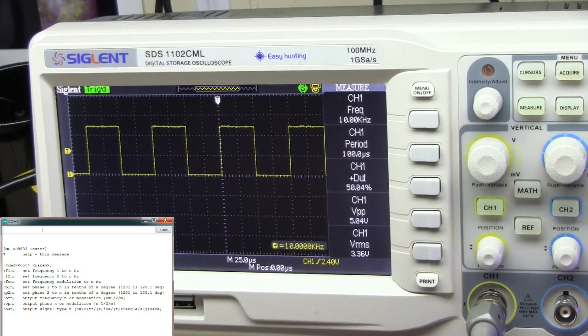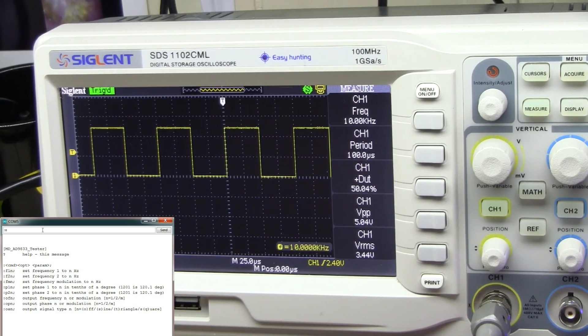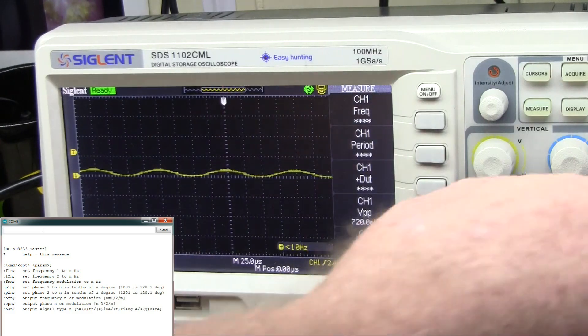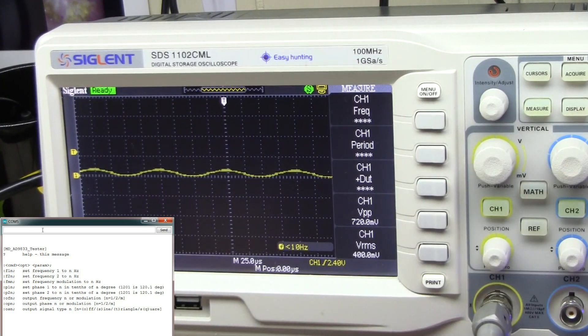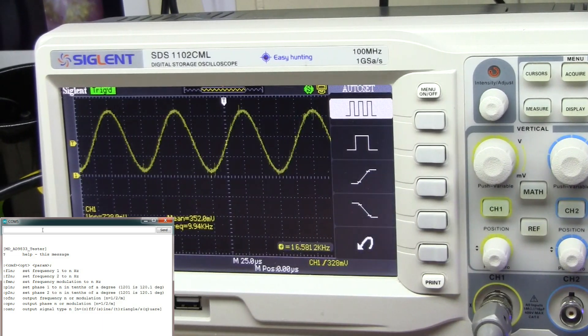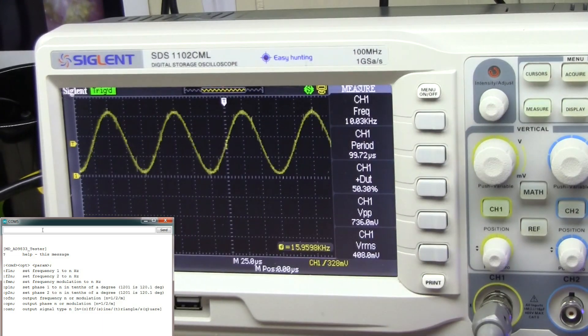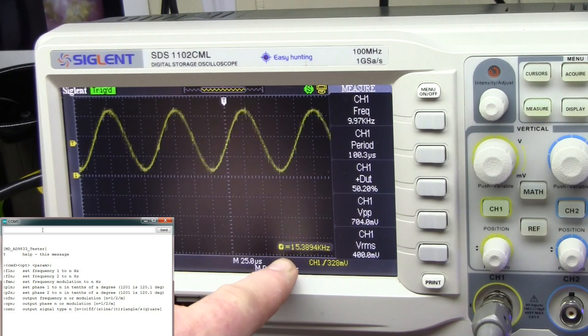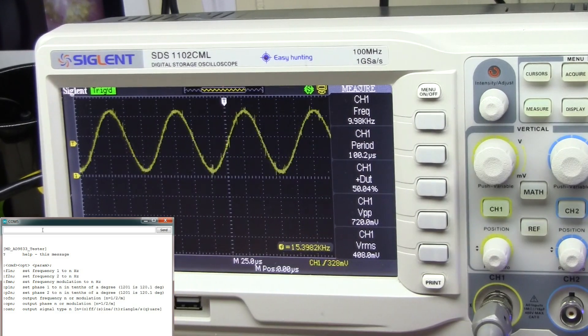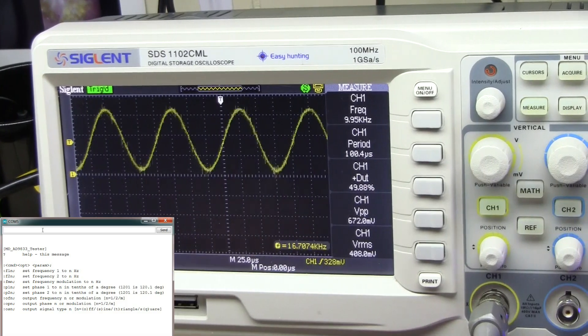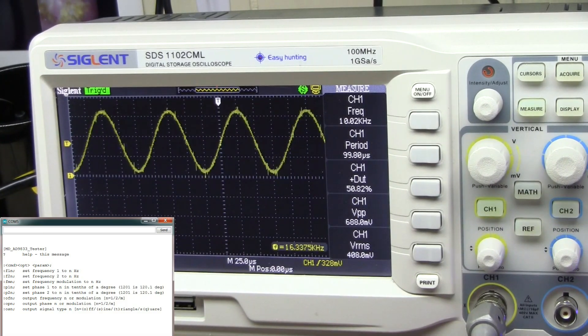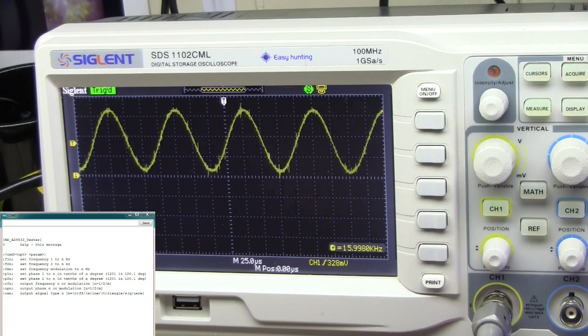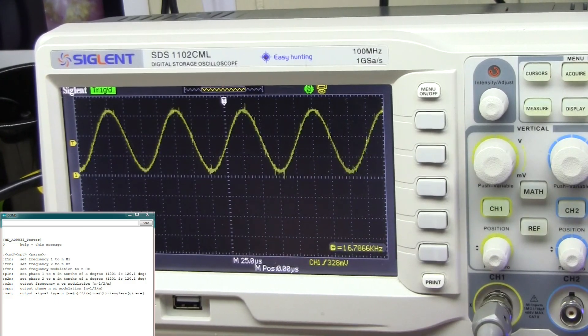Let me go to a sine wave. See, it's showing us 10 kilohertz here, but the hardware counter is seeing 15. We're getting a little bit of jitter. I'm not quite sure why this is happening.